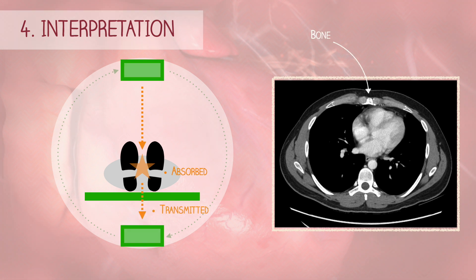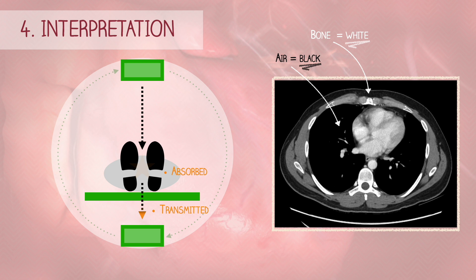Dense structures, like bone, absorb more X-rays, giving the image a bright appearance. Conversely, structures such as air and muscle appear darker, or even black, since they don't absorb as many X-rays and more of the beam reaches the detector.